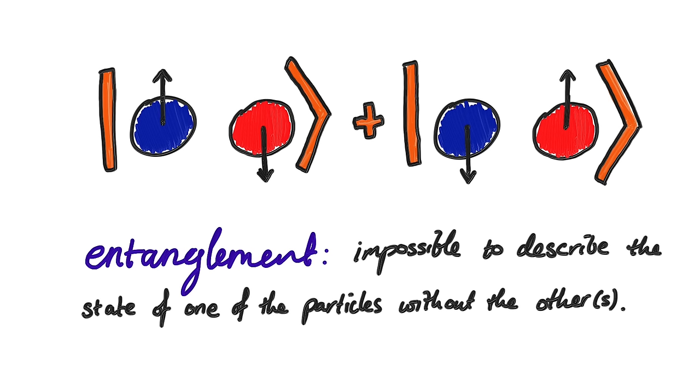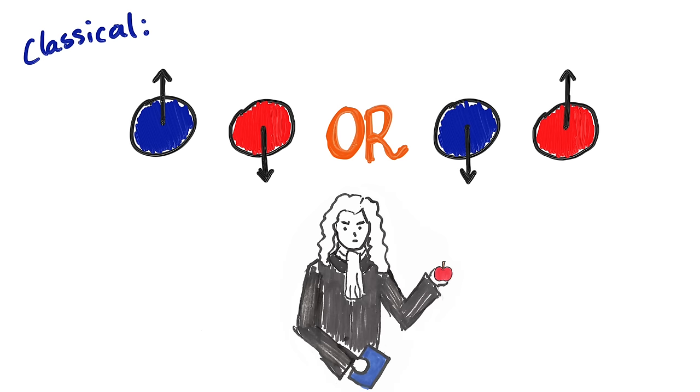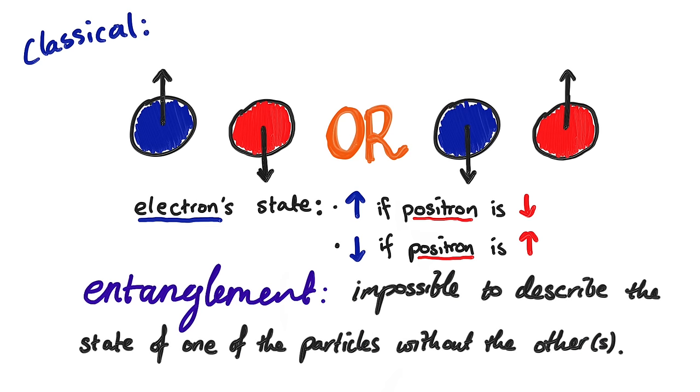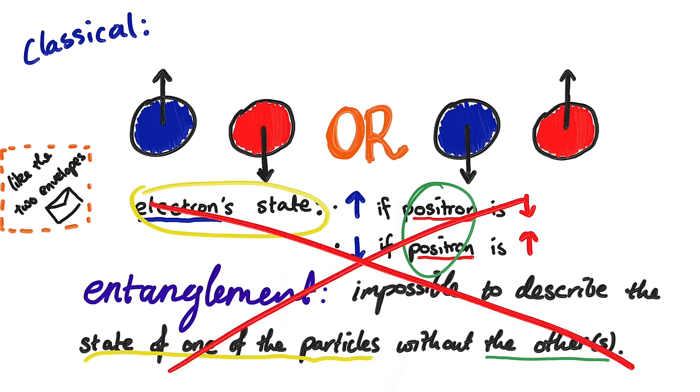To see what this means and why it's unique to quantum mechanics, let's compare it to the not quantum scenario. So classically, we'd think it has to be one or the other of these cases, but not both. It's just that we don't know which. Here, if I wanted to describe the state of the electron, it would be up if the positron is down, and down if the positron is up. This seems like it fits my definition of entanglement. It's impossible to describe the state of the electron without talking about the positron. So why isn't this entanglement?